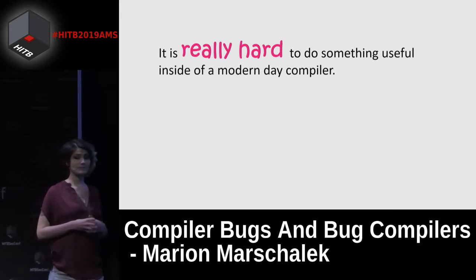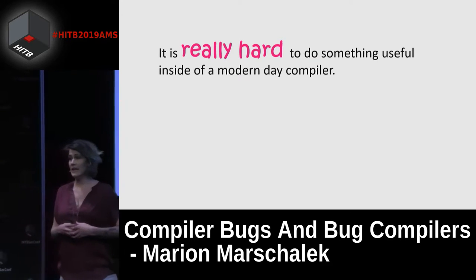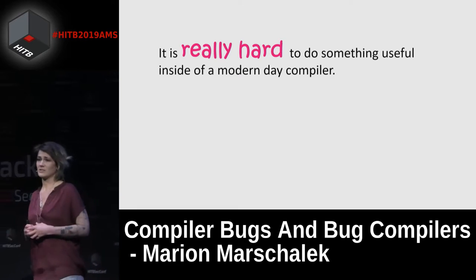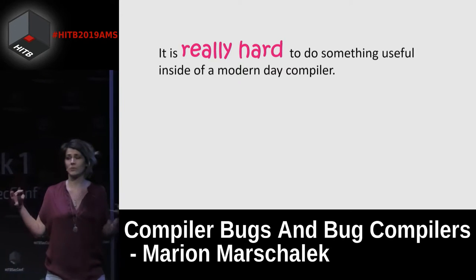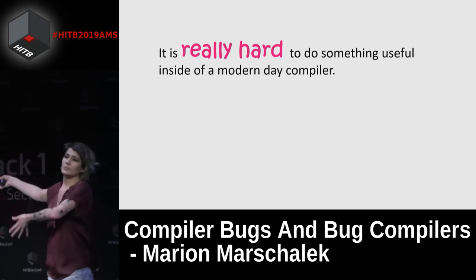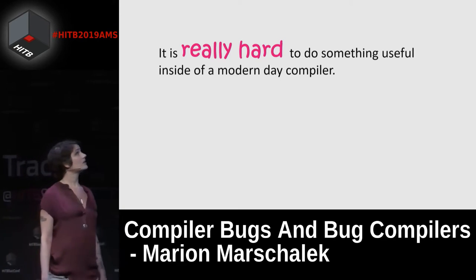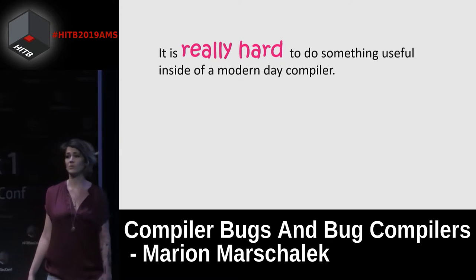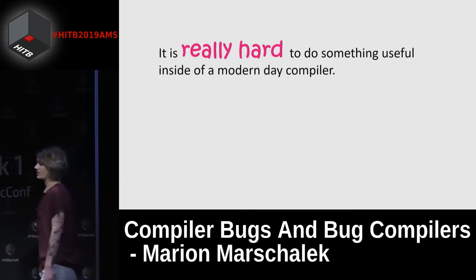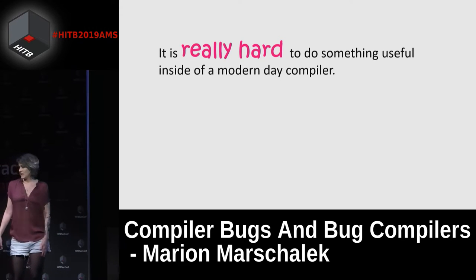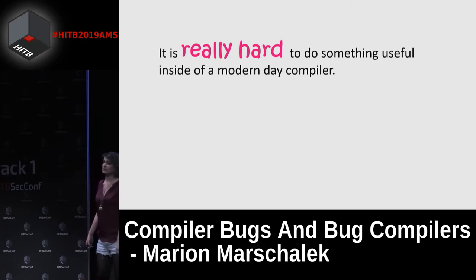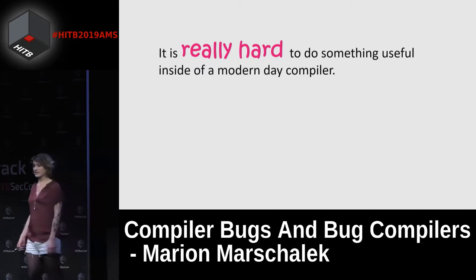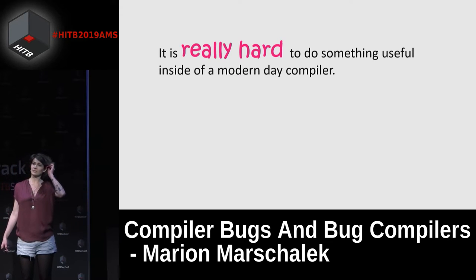Back when Thompson gave his lecture, it looked very simple and straightforward to compromise a compiler and make it do whatever you want. In fact, whatever you do in a modern-day compiler is really hard to be of any use. If you see publications about compiler modifications that propose mitigations or compiling bugs into binaries, keep in mind it is not always as simple as it looks. If a proof of concept looks very straightforward, it possibly is not applicable to most source code bases.